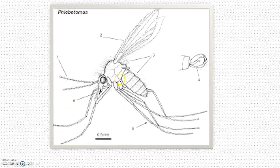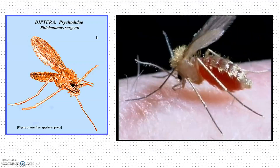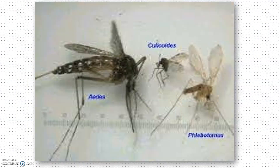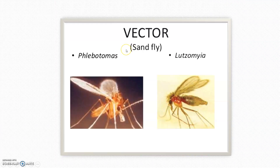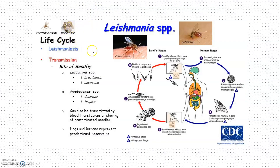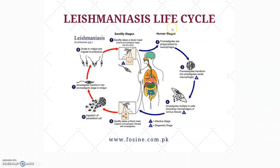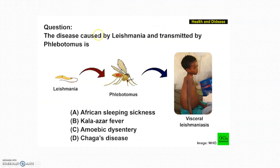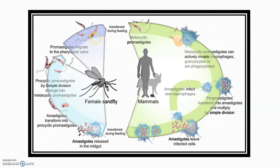This is a comparison of size — this is a Phlebotomus species. This is Culicoides, this is the Aedes mosquito, and this is Phlebotomus. This is the life cycle, and this is the leishmaniasis life cycle showing the sand fly stage and the human stage. Leishmania produces both cutaneous lesions and visceral lesions — this is actually the visceral leishmaniasis.